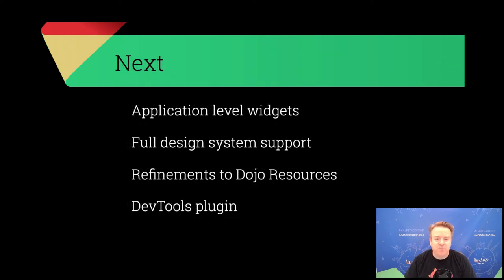That's where we're at with our recent version 7 release. A lot of the components are now function-based widgets. We also added something known as Dojo Resources, which is a way to make a component aware of a resource without having to write a bunch of extra boilerplate in your component.